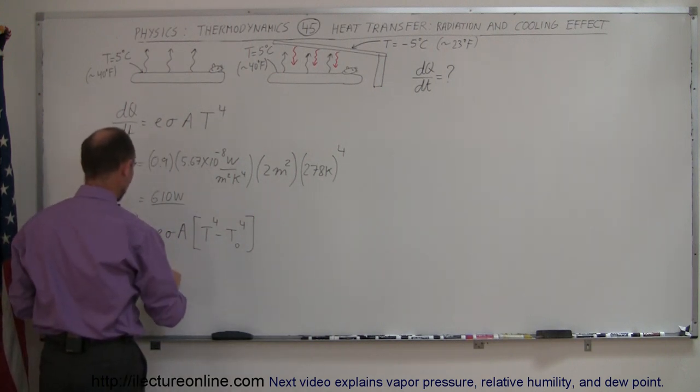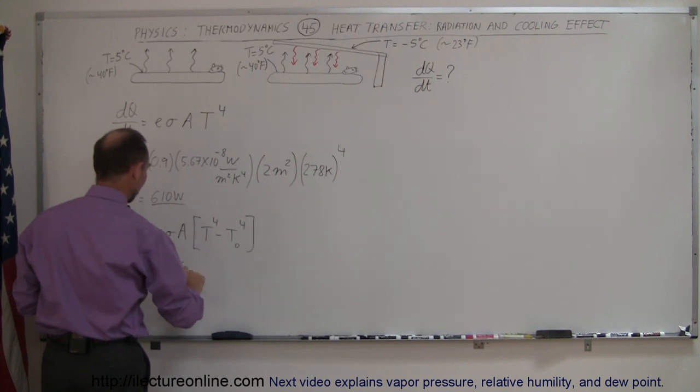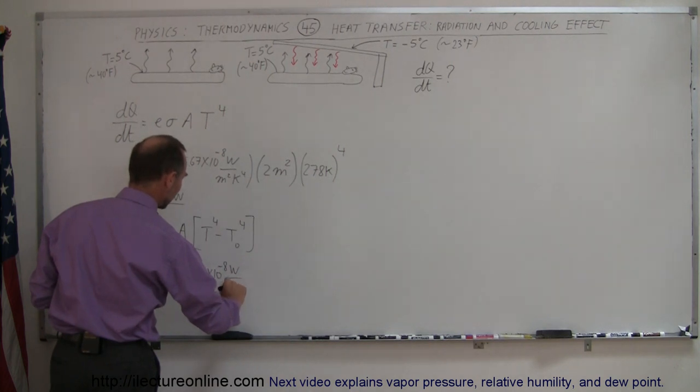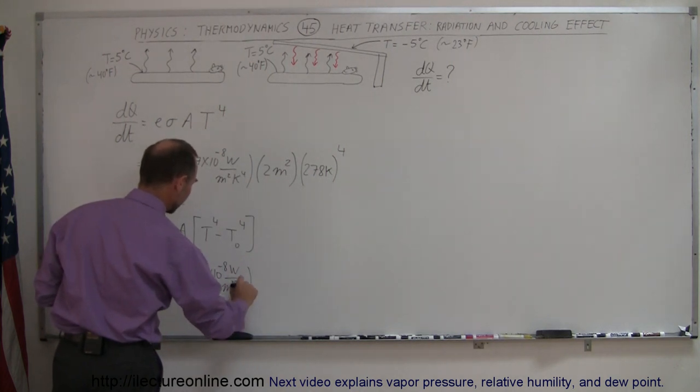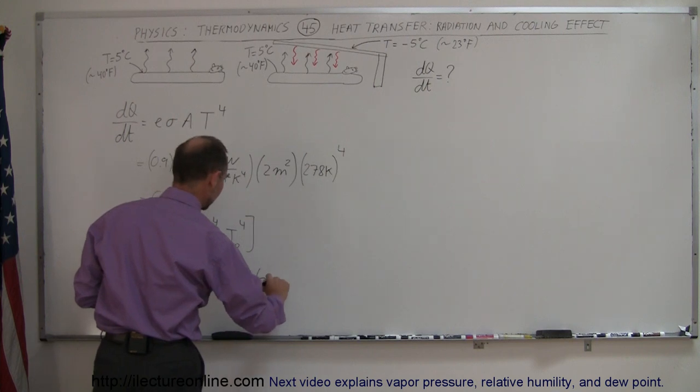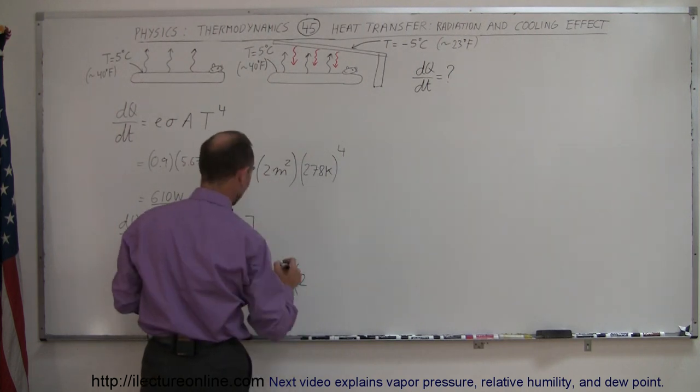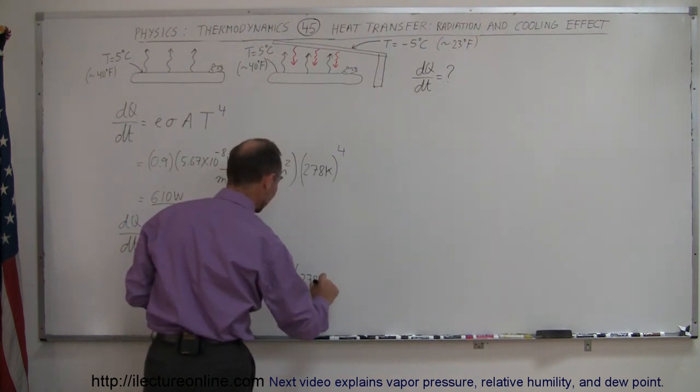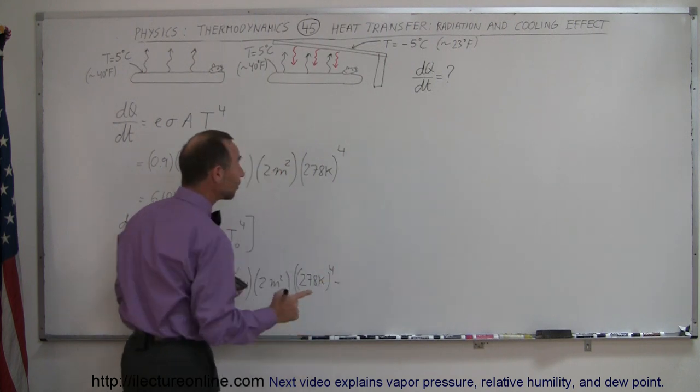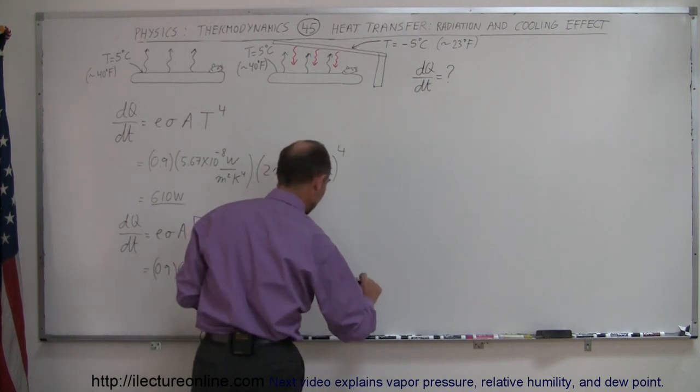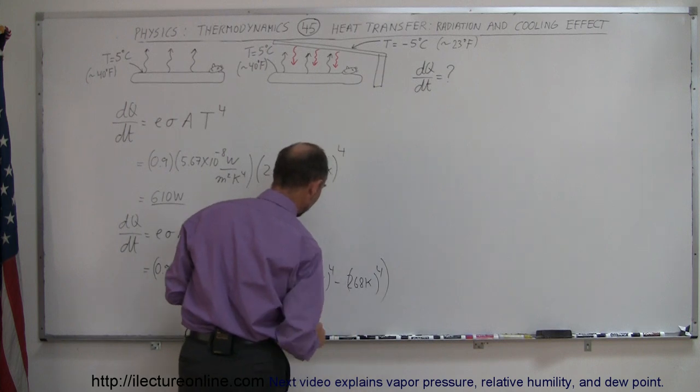So this is equal to 0.9 times 5.67 times 10 to the minus 8 watts per meter squared Kelvin to the fourth power, that's 4 right there. The area still 2 meters squared, and the temperature, that would be, what did we say it was, 5 degrees centigrade, so that's 278 Kelvin to the fourth power, minus the temperature of the roof of the shelter, which would be about 268 Kelvin, 5 below in centigrade, and we have to raise that to the fourth power as well.